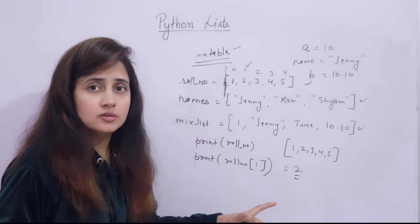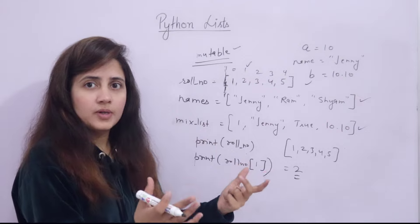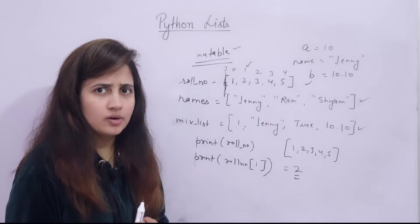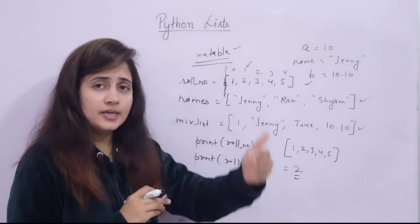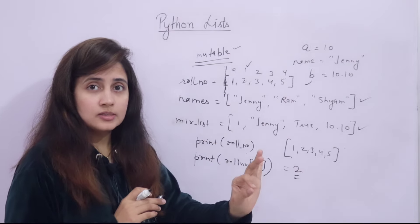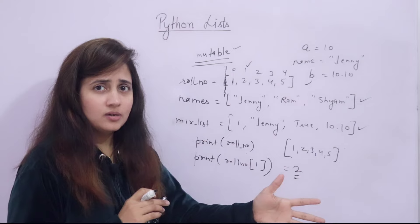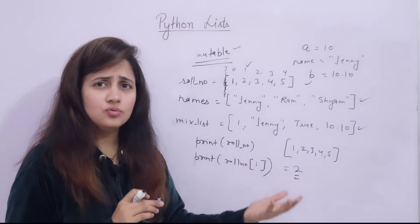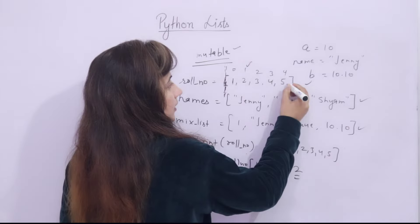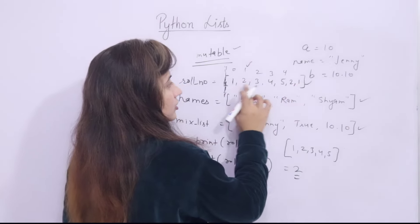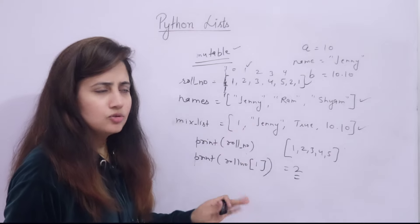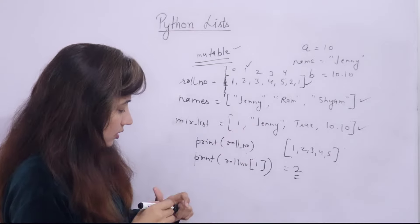But you don't have to remember all the methods. Everything is available in the Python documentation on Google. When you see the Python documentation, many methods are available, so you don't have to memorize all of them. Just keep in mind that yes, you can sort the list — there is a method. Just Google that method, how to use it, and that's it. Also, in list, duplicates are allowed — like having two 1s. In Set, duplicates are not allowed, but in list, duplicates are allowed. So these are some characteristics of list.